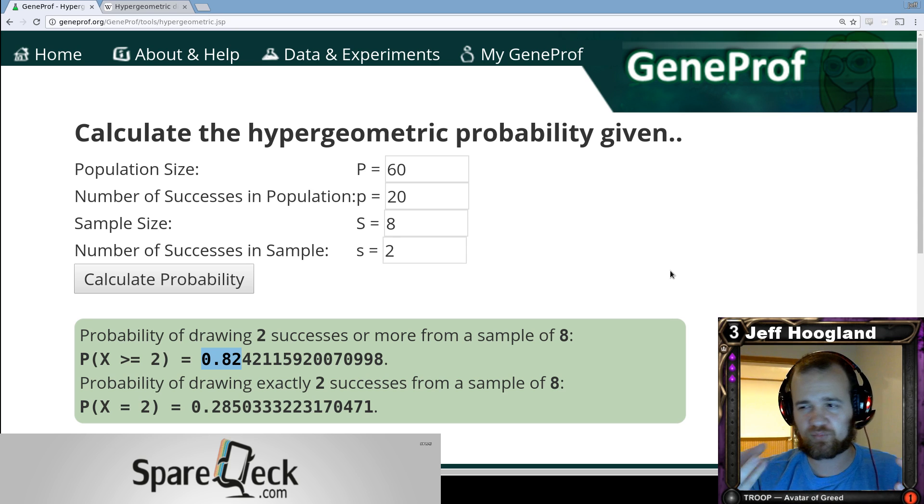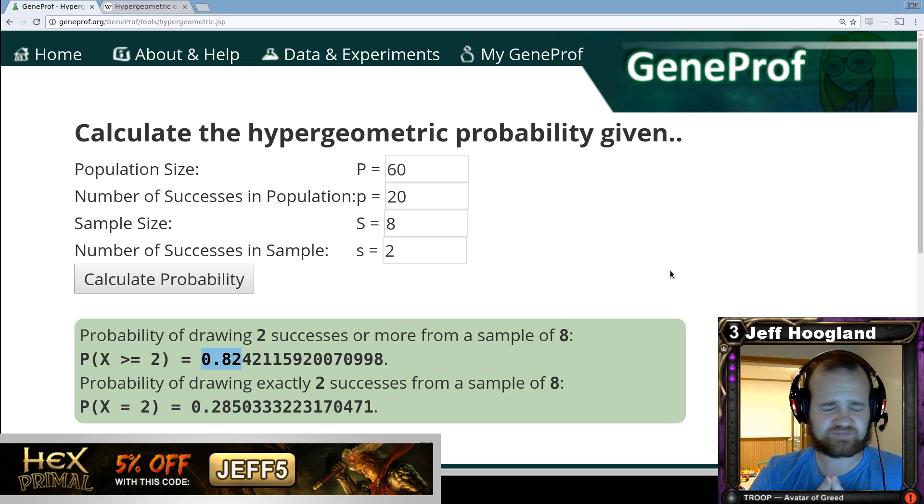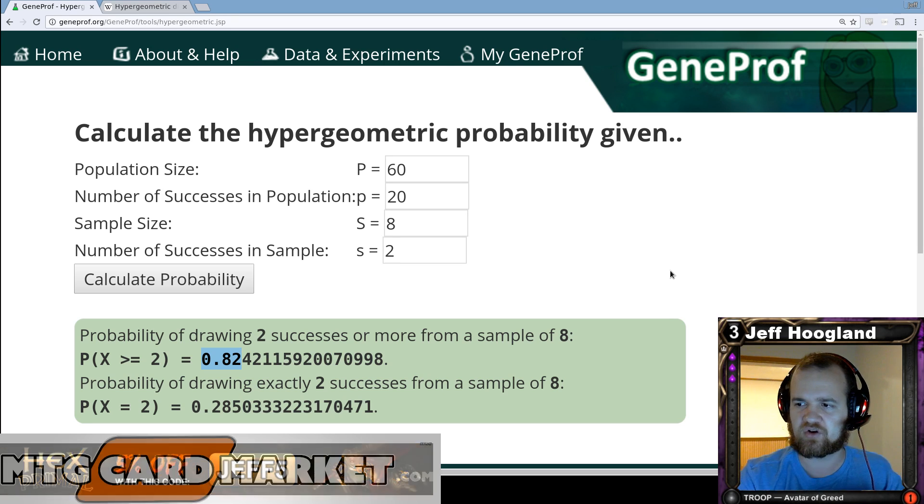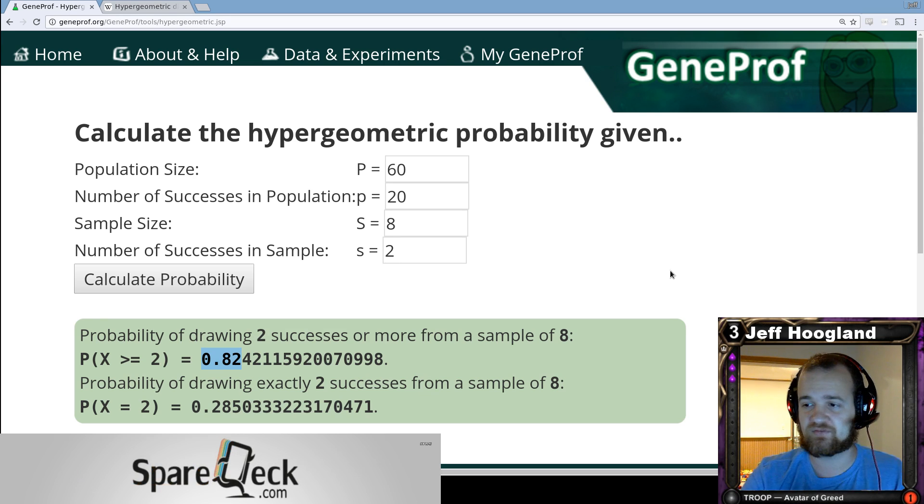So hopefully that's a little bit educational in talking about how you use this function to construct resource bases and get a good idea of how many sources you need to play your cards on time consistently. If you have any questions, feel free to leave them in a comment below and I'll do my best to get back to you. If you want a link to this hypergeometric distribution calculator, you can find that in the description of the video. Thanks for watching, folks.